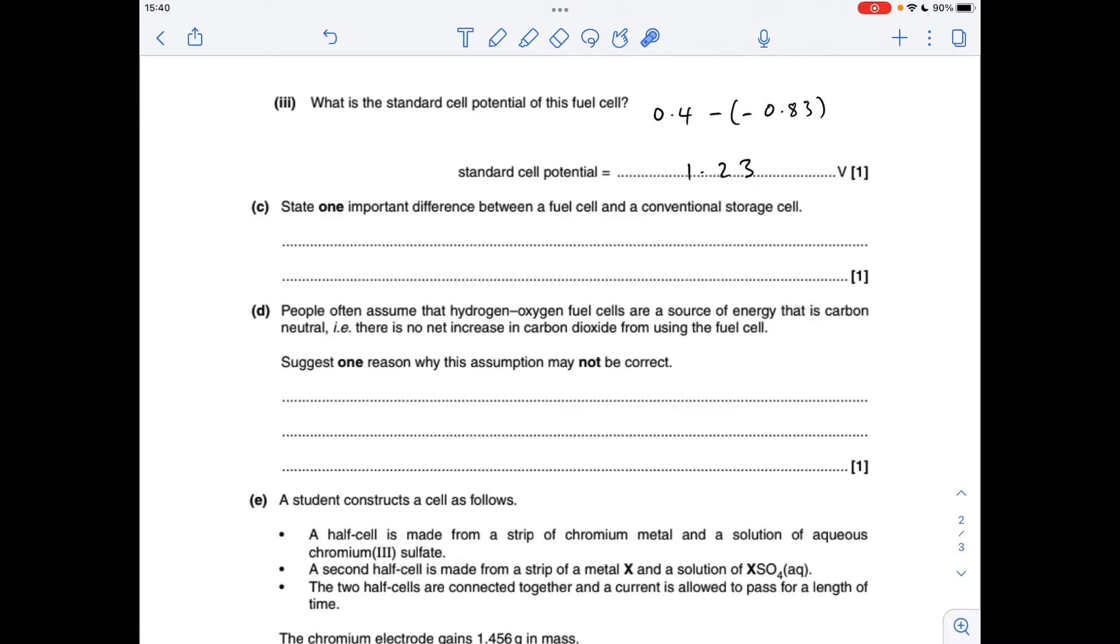An important difference between a fuel cell and a conventional storage cell, so something like this: the fuel cells require a constant supply of fuel going to the cell, whereas a storage cell, as implied by the name, the chemicals are stored within the cell.